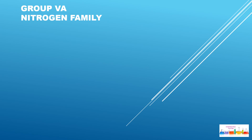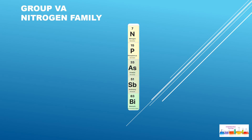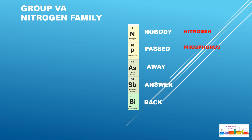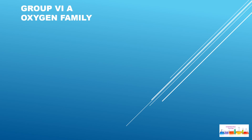Group 5A: Nitrogen family. We need to learn the sentence: 'Nobody Passed Away, Answer Back.' Nobody is for Nitrogen, Passed is for Phosphorus, Away is for Arsenic, Answer is for Antimony (Latin name: Stibium), Back is for Bismuth.